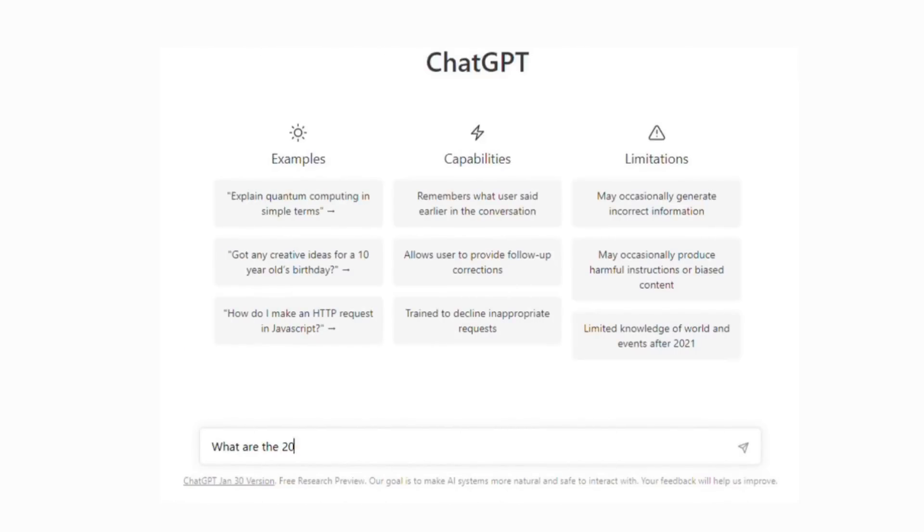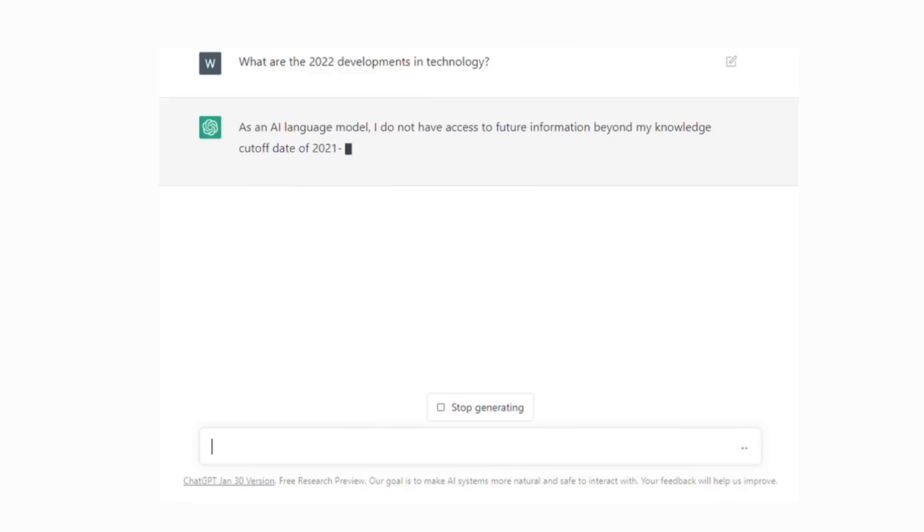For example, if someone were to ask ChatGPT about the latest developments in technology, it may not be aware of advancements that have taken place in the last two years. This can lead to a lack of credibility in responses and may impact the effectiveness of the model when used for more recent and current topics.